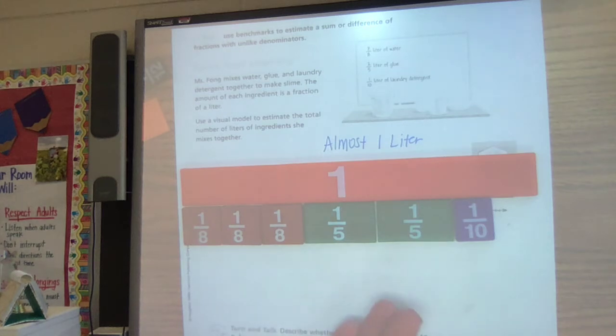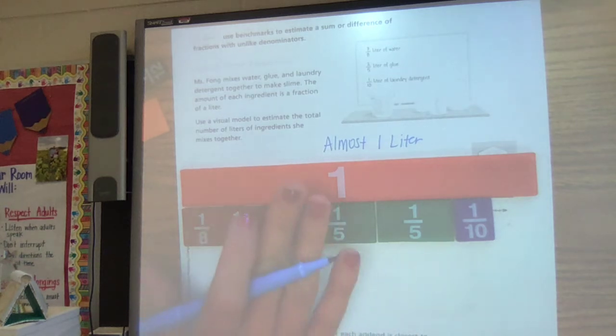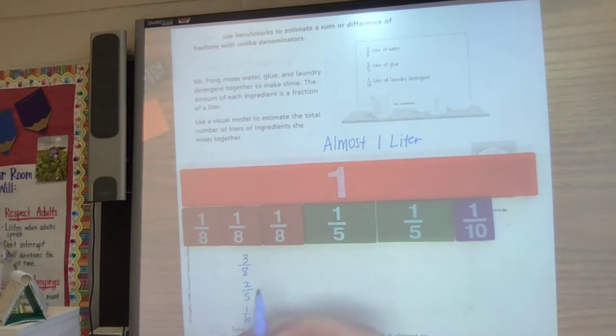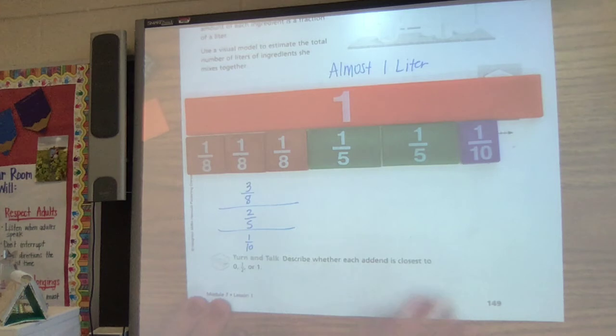Okay, we'll write that almost one liter because you can see it in the right there. Another thing that you can do, let's say we don't have these tiles. We've got three eighths, two fifths, and one tenth. We'll separate them like that. You can always, kind of like it says right here, round those to either zero, a half, or a whole.